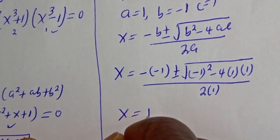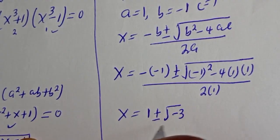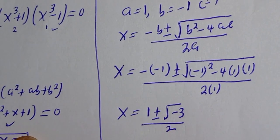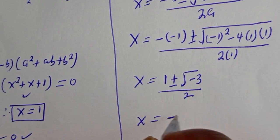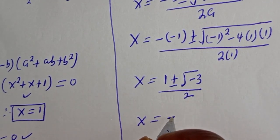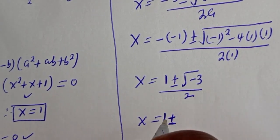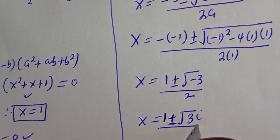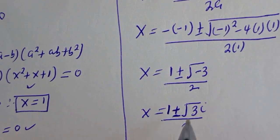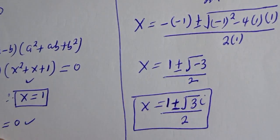Simplifying, s equals 1 plus or minus square root of negative 3, over 2, which gives s equals 1 plus or minus root 3 i, over 2.